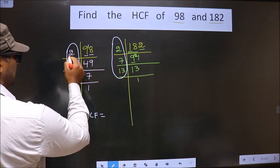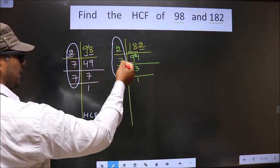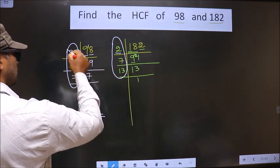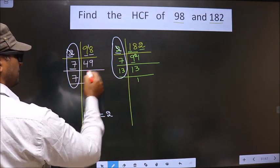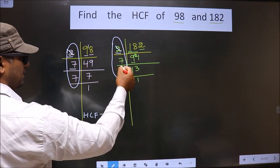Starting with the number 2. Do we have 2 here? Yes. So, you cut 2 and write here. Next number is 7. Do we have 7 here? No.